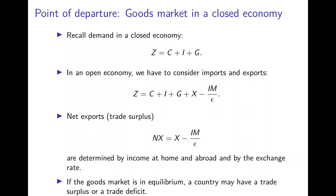Net exports are determined by income at home and abroad, and by the exchange rate. But in equilibrium, when the goods market is in equilibrium, the trade balance does not need to be equal to zero. So there could be a trade surplus and there could be a trade deficit in equilibrium.